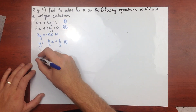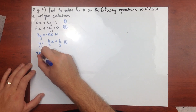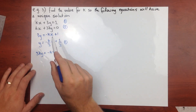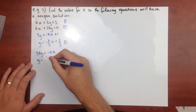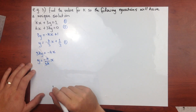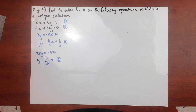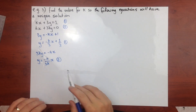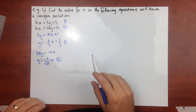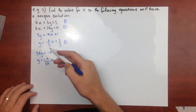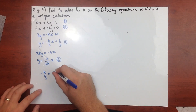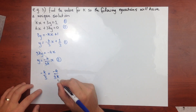For equation two, rearranging gives y equals (negative 4 over 3k)x. Unique solutions occur when the gradients are different. It's easier to find when we do NOT have a unique solution, which is when the gradients are equal, so we set (negative k over 3) equal to (negative 4 over 3k).